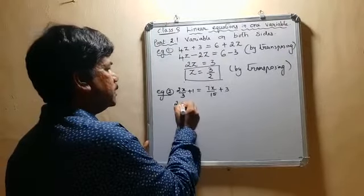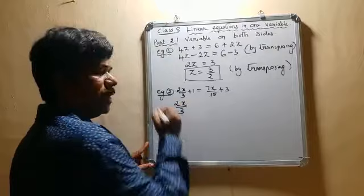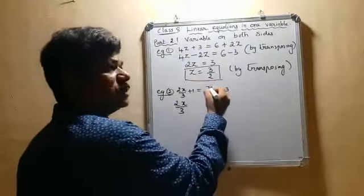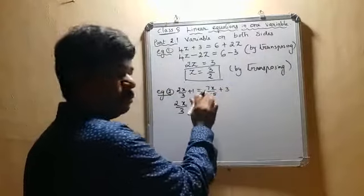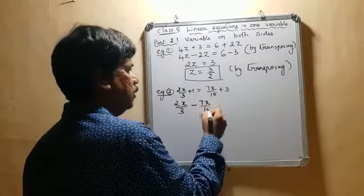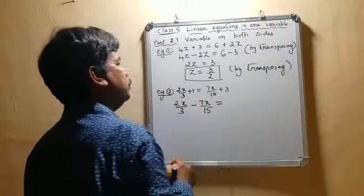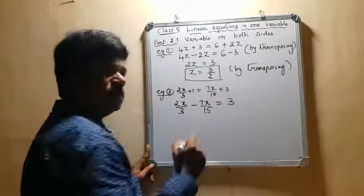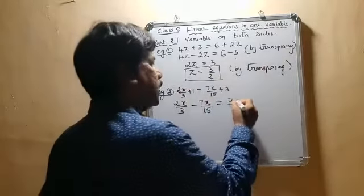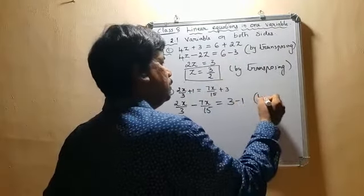Here, 2x by 3 already has a variable x in it. So send this 7x by 15, which is a positive term, to the other side. It becomes minus 7x by 15. This equals 3, which is already present. Take this plus 1 to the other side. It becomes minus 1 by transposing.